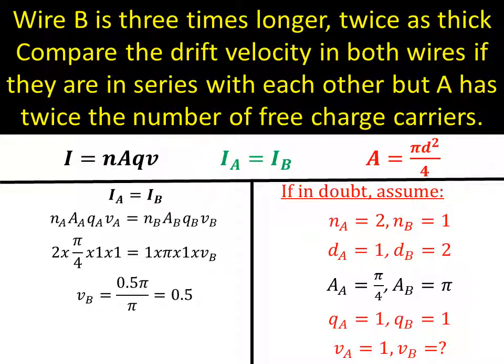What does that tell me? Well, if I look back to vA, vA was 1. vB is 0.5. So vB is half as big as vA. And that's how you'd answer a nasty drift velocity question.